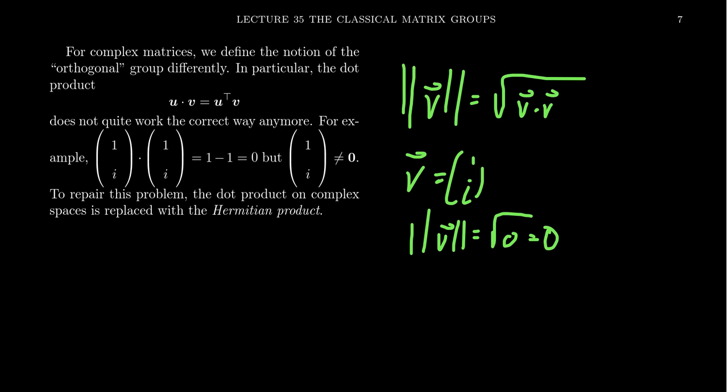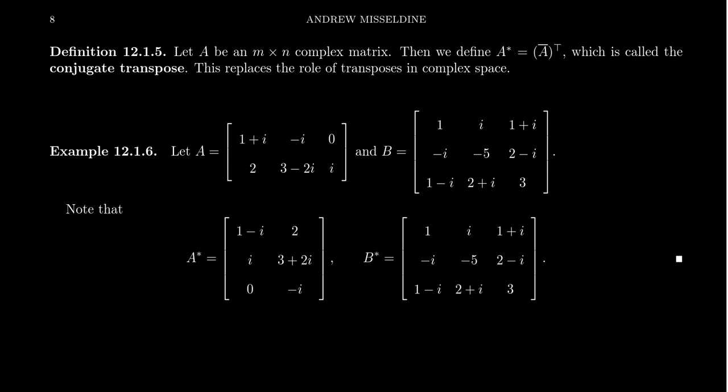Instead of using the dot product for complex vectors, we use the so-called Hermitian product. If you have A as an n-by-n complex matrix, we define the conjugate transpose, usually denoted A*. We take the real transpose but also include the complex conjugate — that bar on top means we take the conjugate of all the numbers. So whenever you talk about a complex vector space, a complex matrix, or a complex vector, you always use the conjugate transpose and never the regular transpose, because not taking conjugates is why we got zero when we shouldn't have. We didn't notice this with real vector spaces because the conjugate of a real number is just itself.